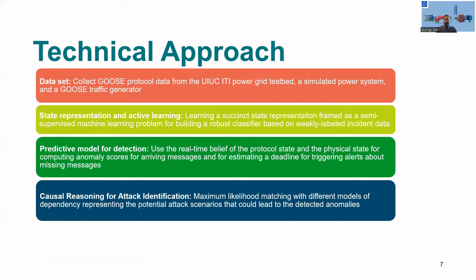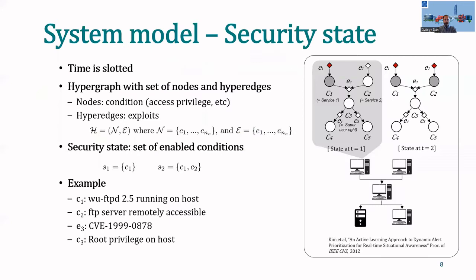Then, we plan to develop a predictive model for incident detection, where we use a real-time belief about the protocol state and the physical state and the IT system state for computing anomaly scores for events that happen in the system. And finally, to use causal reasoning for attack identification using a maximum likelihood matching of the observed events in the system and comparing with representations of potential attack scenarios that could actually lead to the events that we observed.